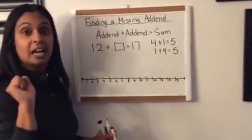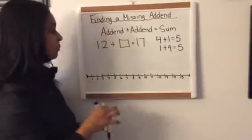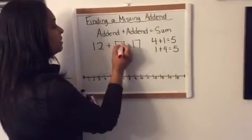Or we can use our punching out: 12, 13, 14, 15, 16, 17. And we know that that missing addend is five.